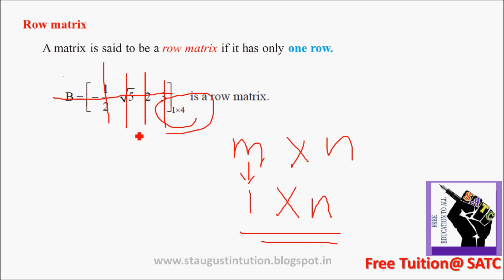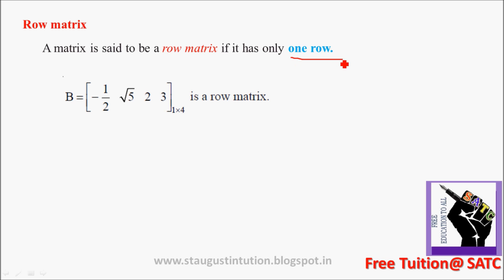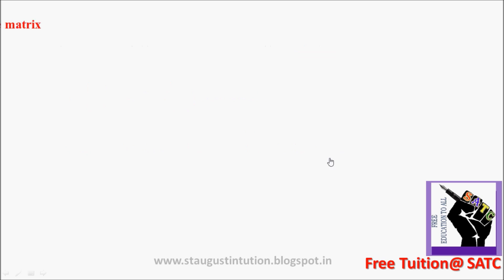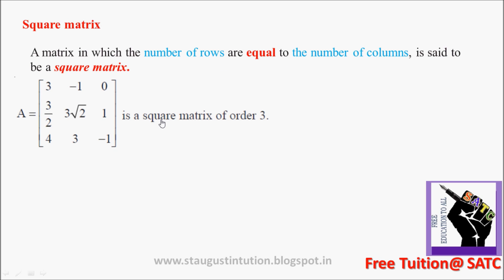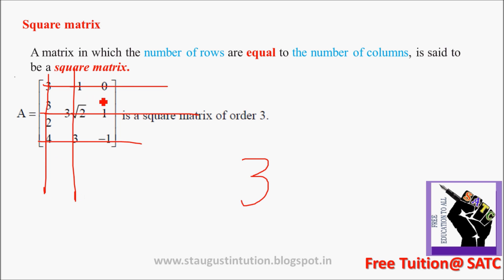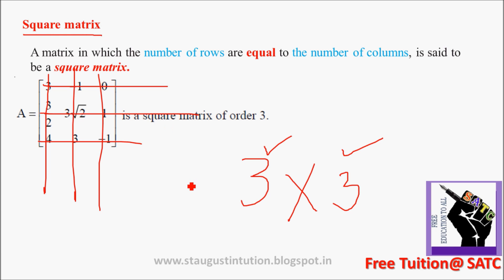The matrix in which the number of rows are equal to the number of columns is said to be a Square Matrix. For example, in this matrix there are 3 rows and 3 columns. Since the number of rows and number of columns are equal, it is a Square Matrix.